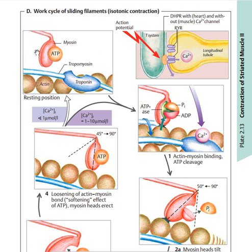Normally there is an ATP molecule attached to the head of myosin. This calcium ion is going to cause rotation, and normally this is ATP — when ATP is bound, the head of the myosin is not attached to the tropomyosin chain.